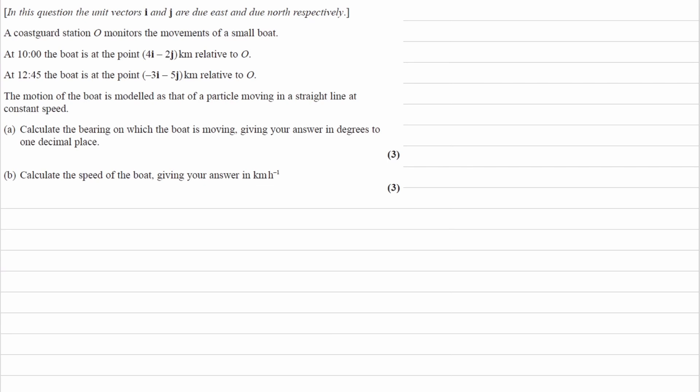We're told in this question that I and J are the vectors due east and due north. A coast guard is at position O, monitoring the movement of a small boat. The boat, at two different times, is at these two positions relative to O. We're trying to work out the bearing on which the boat is moving. We're told that the boat is moving in a straight line at a constant speed.